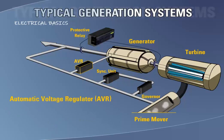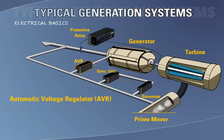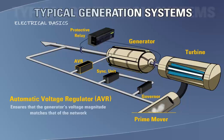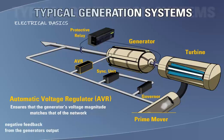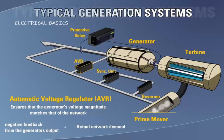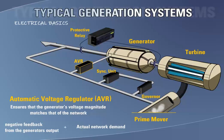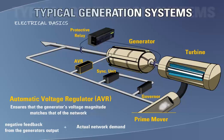The automatic voltage regulator is also an essential component in matching the power being generated to the power demanded by the network. The AVR ensures that the generator's voltage magnitude matches that of the network. It does this by summing the negative feedback from the generator's output voltage with that of the network. The error signal is fed to the generator field current regulator, which increases or decreases the field strength so that the generator voltage magnitude matches that of the network.